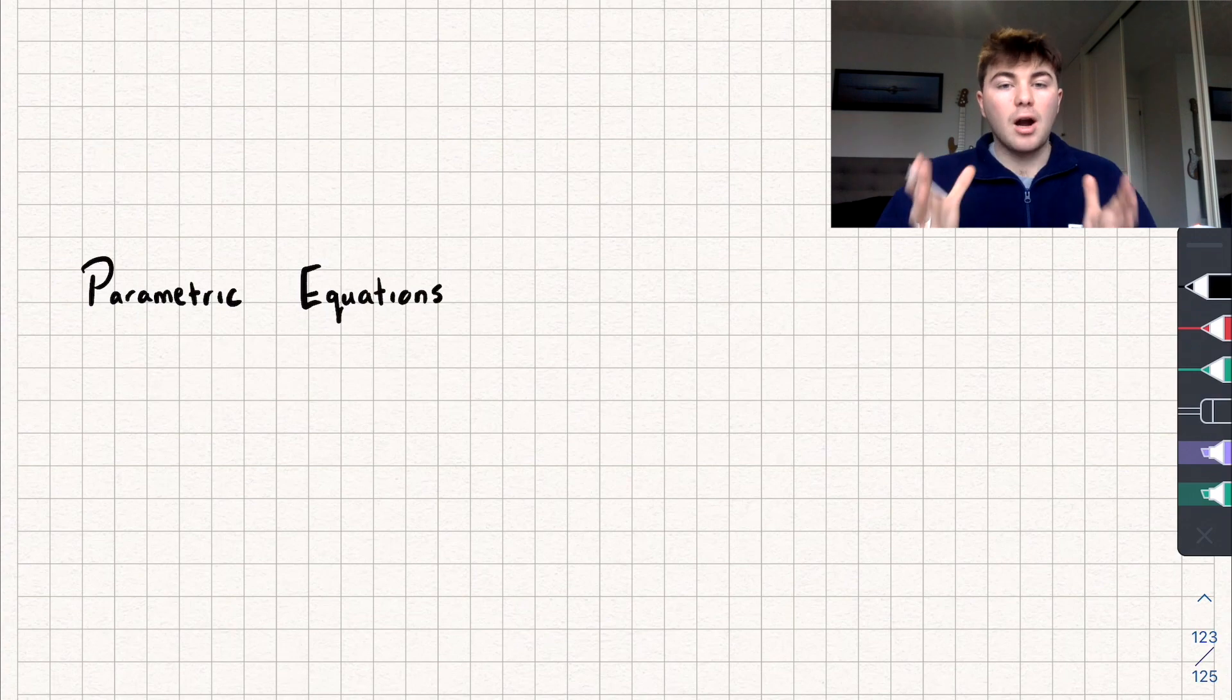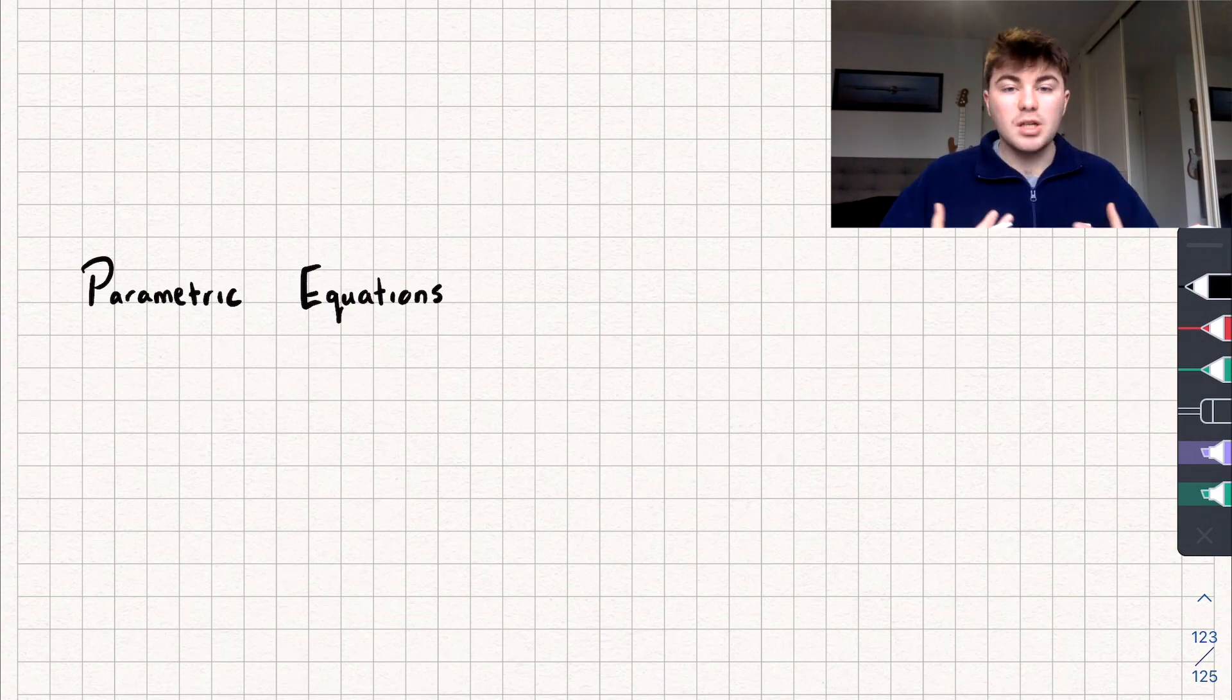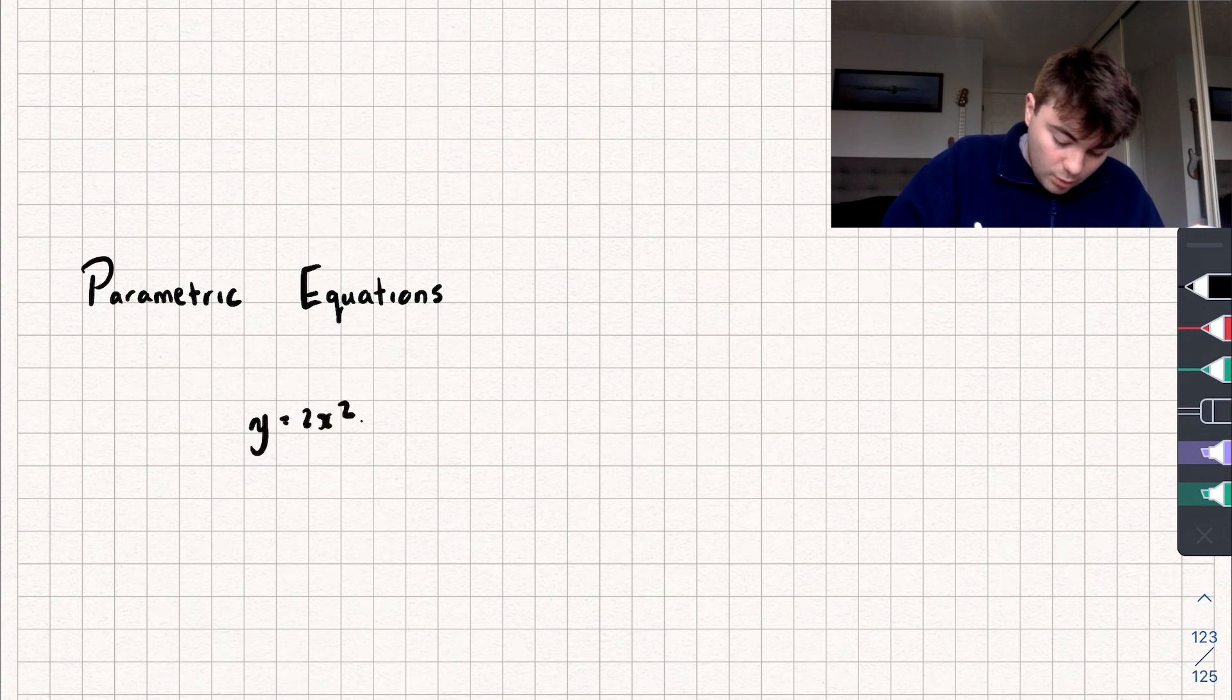So we'll start off by saying, what are parametric equations? Well, they're just an alternative way for us to describe a curve. Usually when we've been describing curves, we've been using Cartesian equations which look something like y equals 2x squared plus 4.